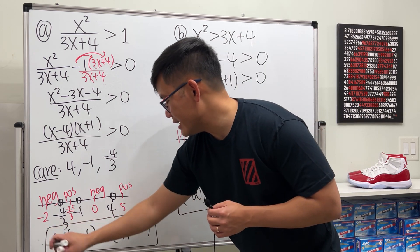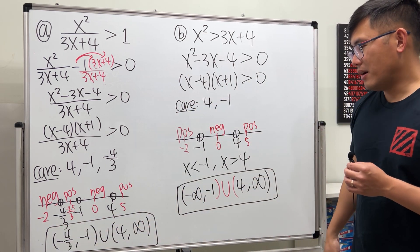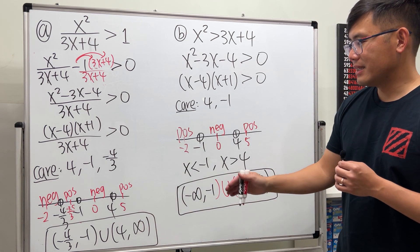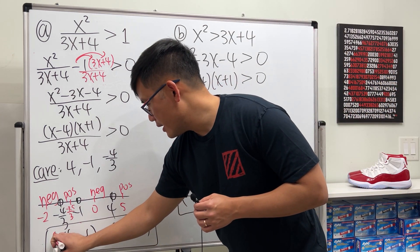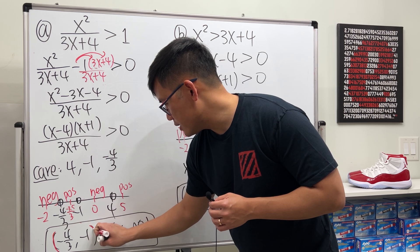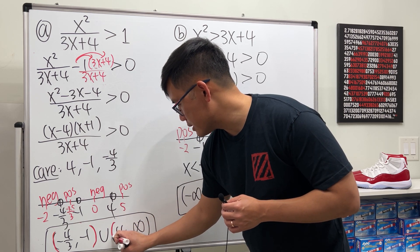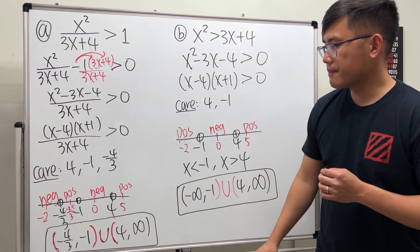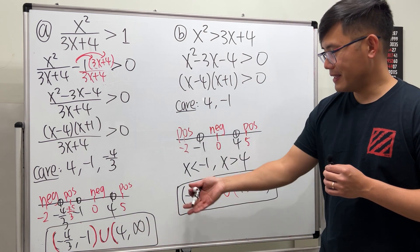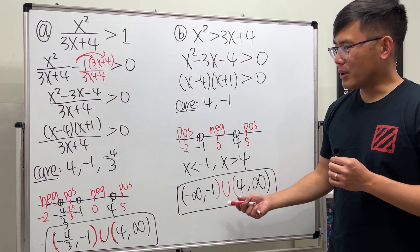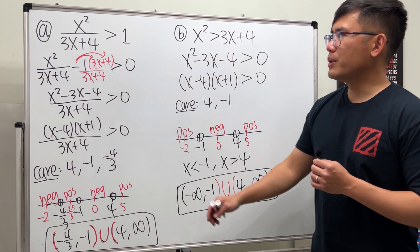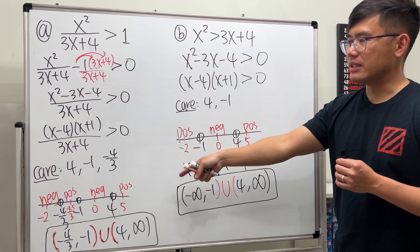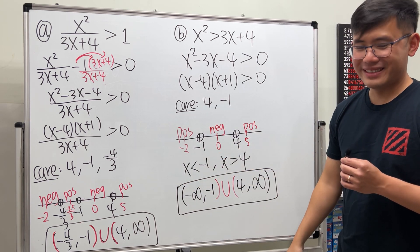Comparing the two answers: they share the interval (4, ∞) but differ in the other part — the rational inequality gives (-4/3, -1) instead of (-∞, -1). Remember these are open interval notations — endpoints are not included. Practice rational inequalities using the sign chart method; it's the safest approach.